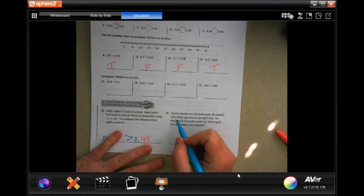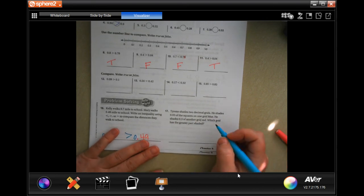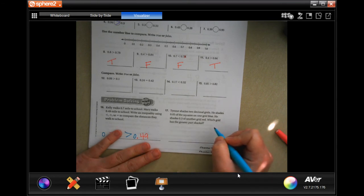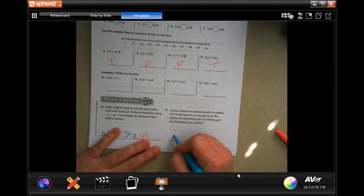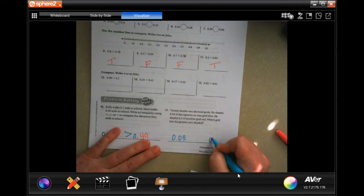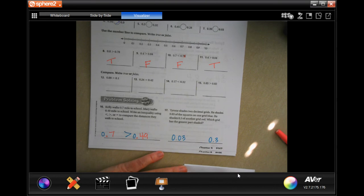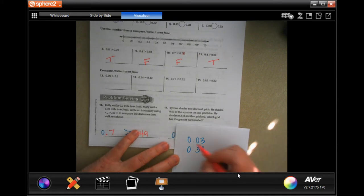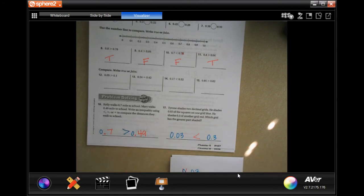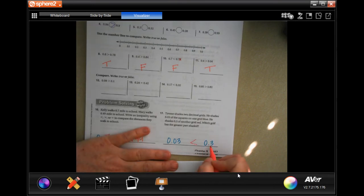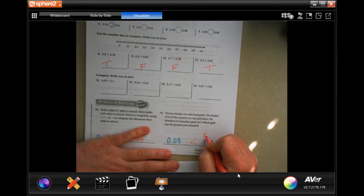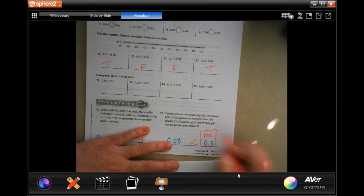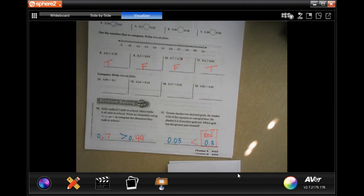Tyrone shades two decimal grids. He shades 0.03 of the squares on the grid blue. He shades 0.3 of another grid red. Which grid has the greater first? So, 0.03 or 0.3. So, if we're doing it like our ABC order, now I'm going to put a 0 there just so I have the same amount of numbers. Well, 0s are the same. Oh, 3. This one's bigger. So, since the 0.3 is bigger, that's the red one.